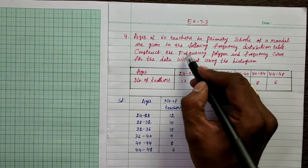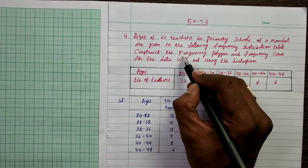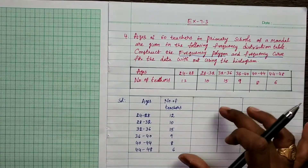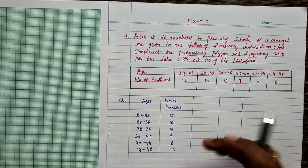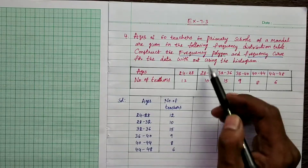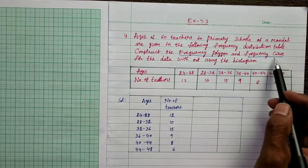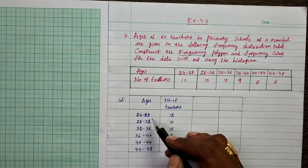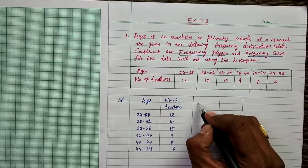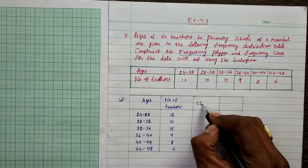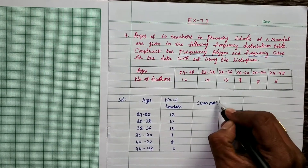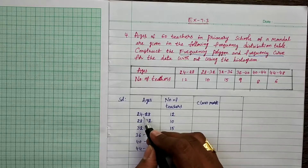To construct the frequency polygon or frequency curve, we need a third column: class marks. Class marks means the mid-value of the class interval.